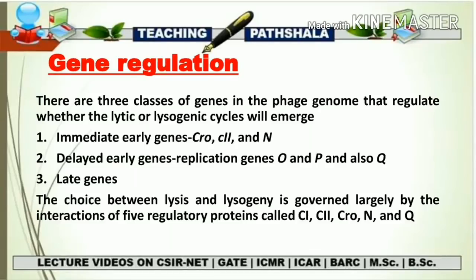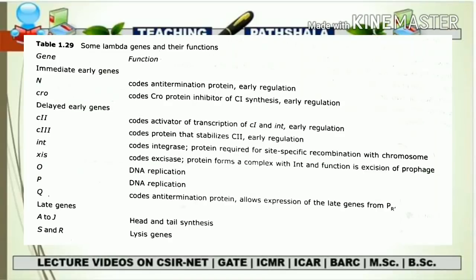Now let's talk about the main part: gene regulation between the lytic and lysogenic cycle and how the decision is made. There are three classes of genes in the phage genome. The first class is the immediate early genes — examples are Cro, C2, and N genes. The second class is the delayed early genes, which includes replication genes like O, P, and Q. The third class is the late genes. The choice between lysis and lysogeny is governed largely by five regulatory genes: C1, C2, Cro, N, and Q.